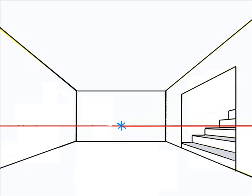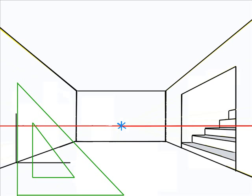On the opposite wall, we'll make stairs coming out into the room. Remember to use your triangle to make sure your vertical lines are nice and straight.